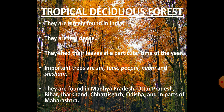Tropical deciduous forests, also called monsoon forests, are found in a large part of India. The trees in these forests are usually not as close together as in the tropical rainforests and have a definite leaf-shedding period of six to eight weeks in a year. Major trees of deciduous forests are Teak, Sal, Shisham, Sandalwood, Peepal and Neem. These forests are found in Madhya Pradesh, Chhattisgarh, Jharkhand, Bihar, Odisha, Uttar Pradesh, Tamil Nadu and Maharashtra.